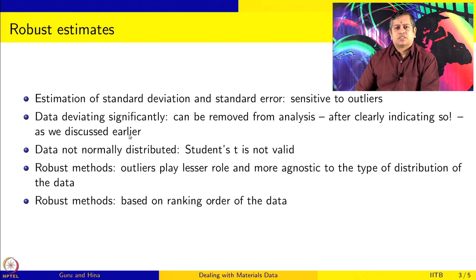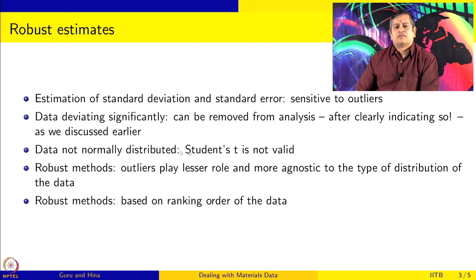A second problem is that if the data is not normally distributed, the assumptions we made about the normal distribution, Student's t, chi-squared, etc. are not valid. So we want to have estimates for means and spread of data which are agnostic to the type of distribution, and where outliers play a very nominal role in determining those quantities.